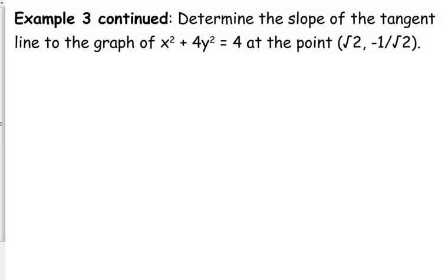Our new function is x² + 4y² equals 4. We want to find the slope of the tangent line to the graph at the point (√2, -1/√2). Now, those look like nasty numbers because they're square roots, but look at our function. It has squares in it, so hopefully something's going to work out here and it's really not that bad.